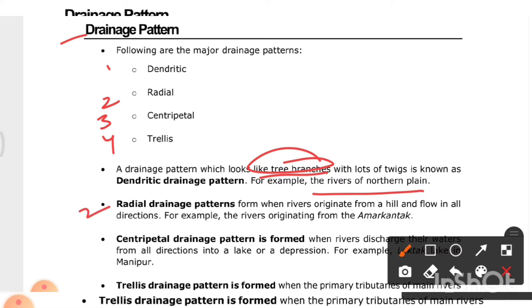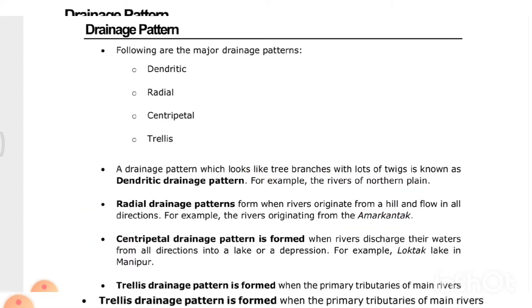The radial drainage pattern is formed when rivers originate from a hill and flow in all directions — for example, rivers originating from Amarkantak. The centripetal drainage pattern is formed when rivers discharge their waters from all directions into a lake or depression — for example, Loktak Lake in Manipur.